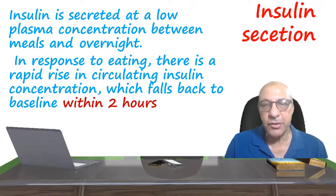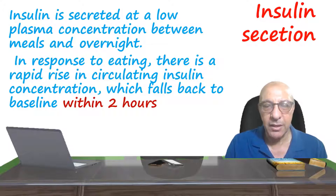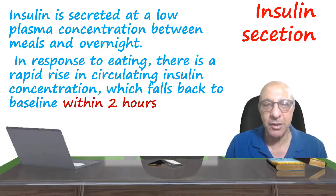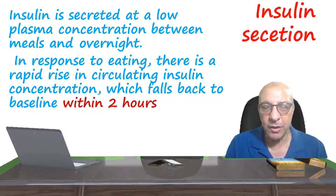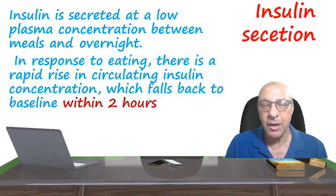Insulin is not secreted only during meals. It is secreted all the time at a low basal level, and there is an increase in the amount secreted after meals in response to the increase of glucose concentration in the blood. When we go to the treatment of diabetes later on, we'll try to simulate this pattern of insulin release — giving a basal insulin secretion covering most of the 24 hours at a low concentration, then giving multiple doses of rapidly acting insulin with meals, going directly in proportion to the glucose intake, simulating the natural rhythm of insulin secretion.